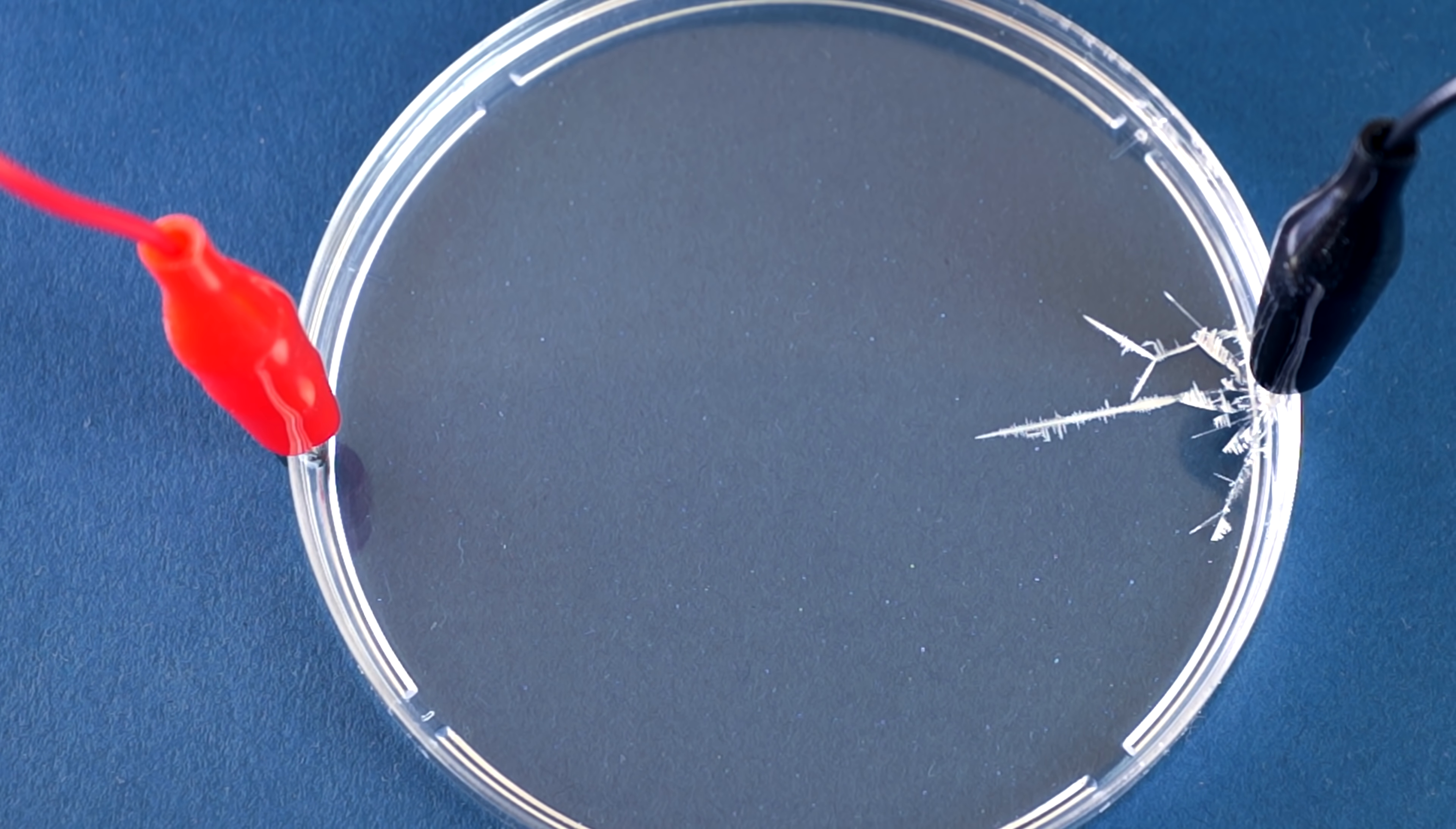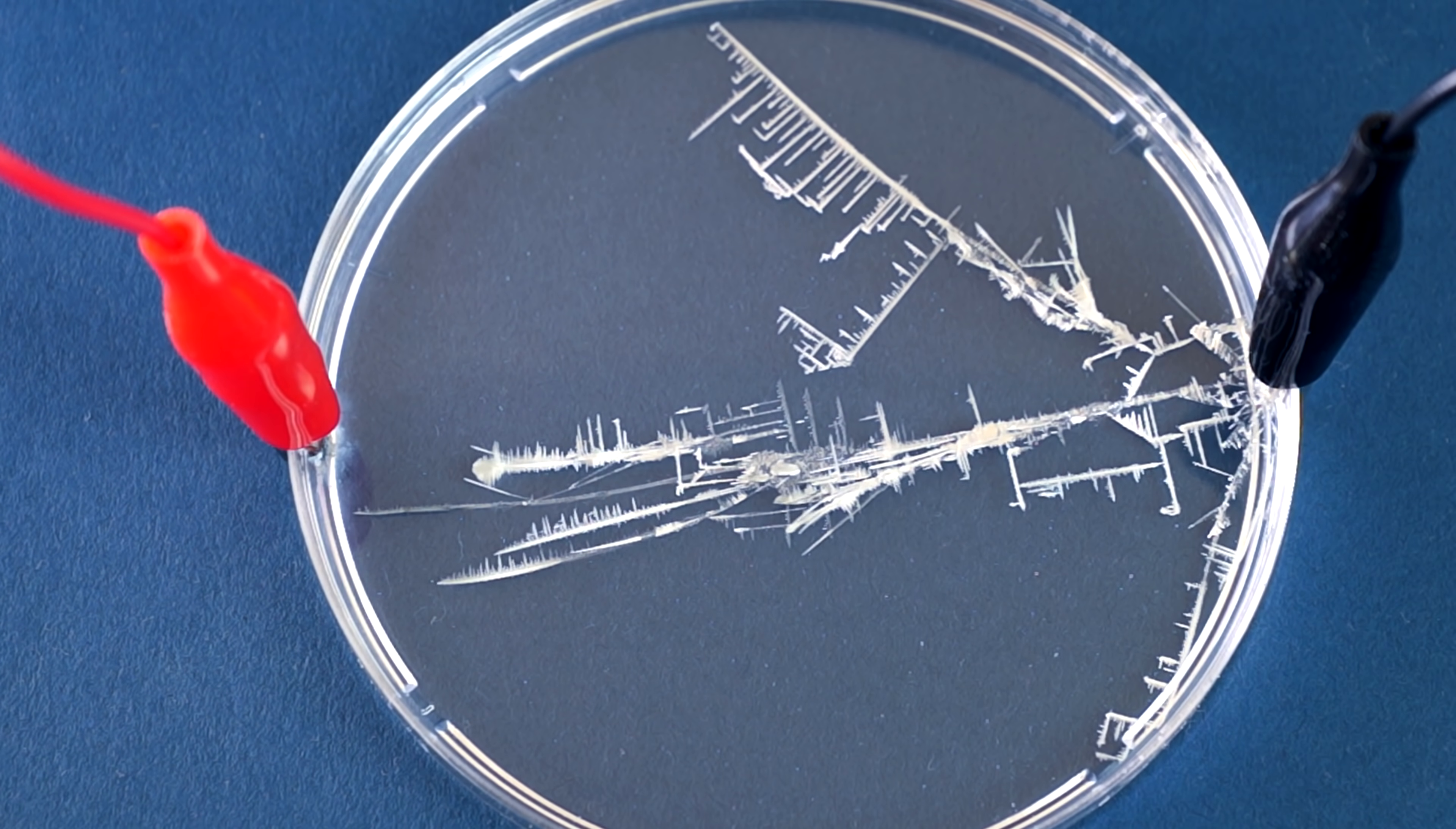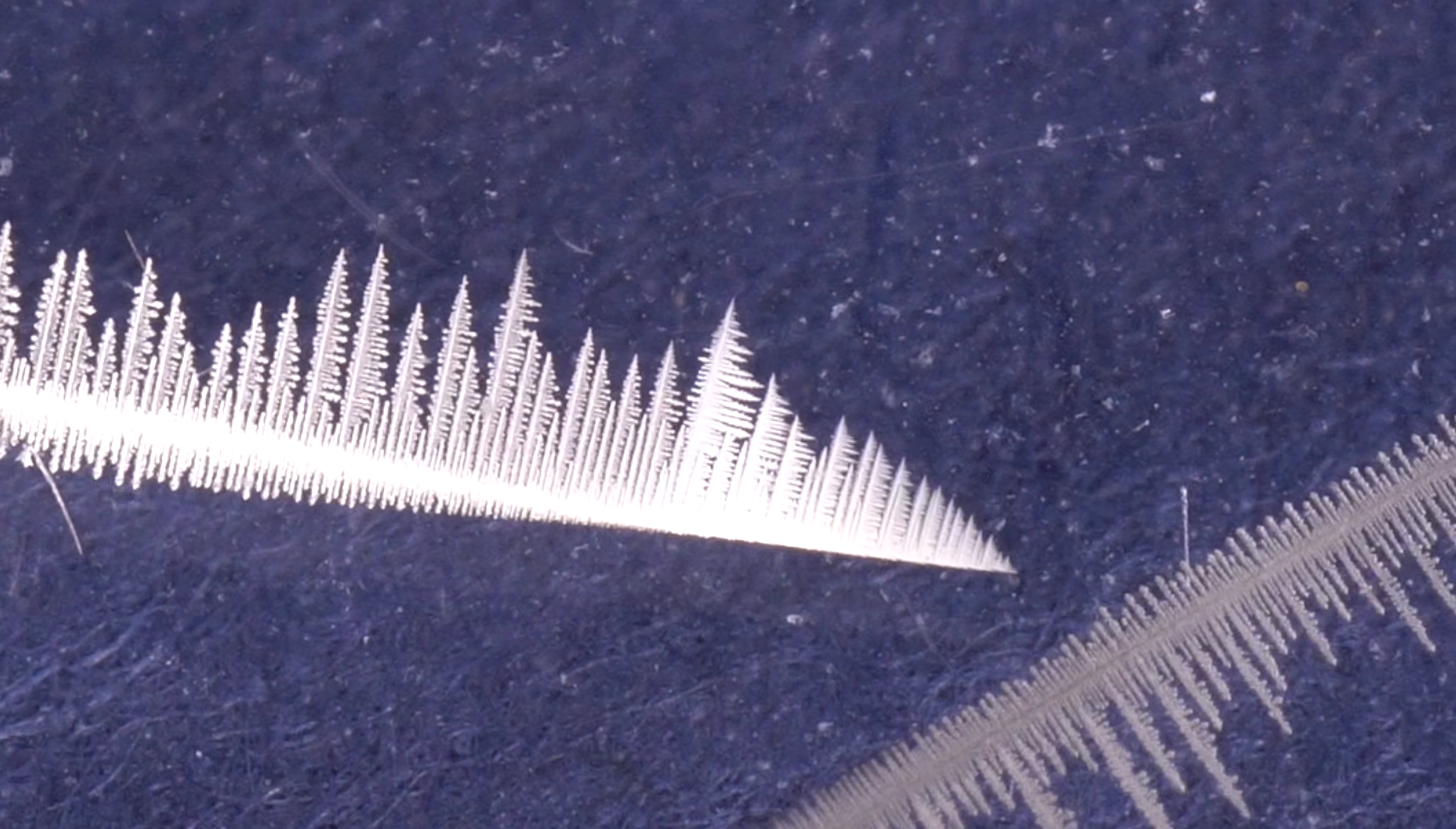At the same time begins the process of reduction of tin chloride to beautiful tin crystals at the cathode and, as anode, tin is oxidized to tin dioxide. Tin crystals look very beautiful, especially in macro photography.